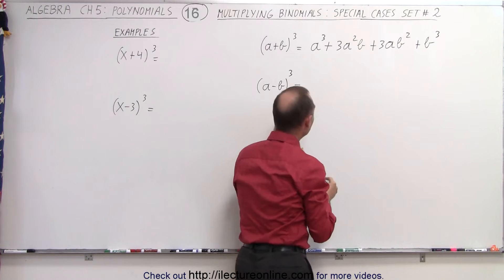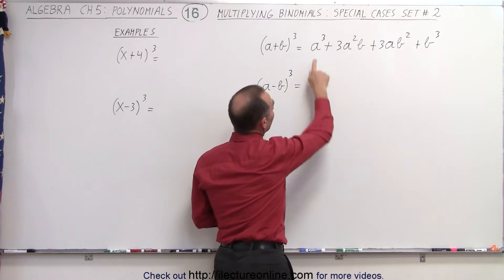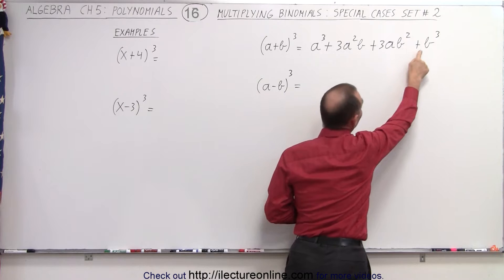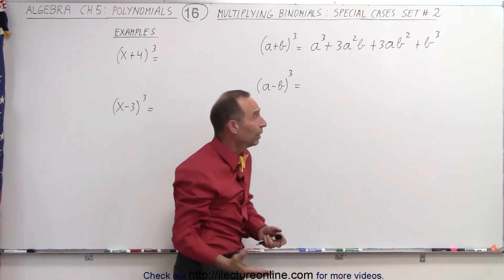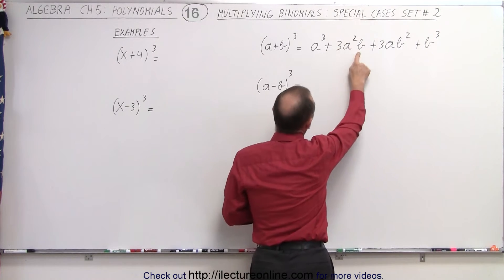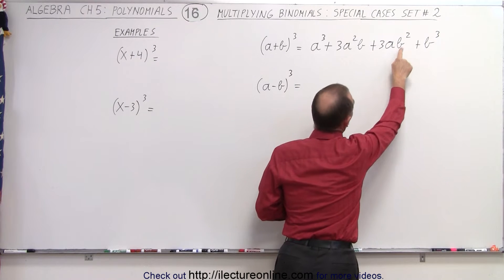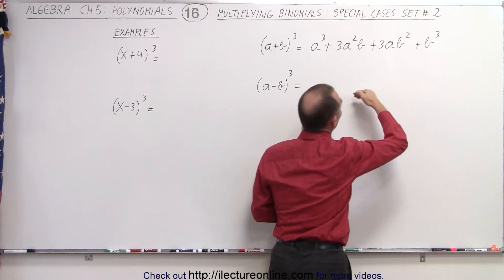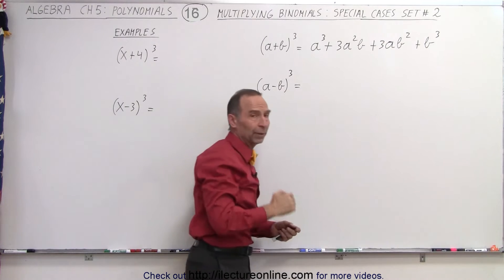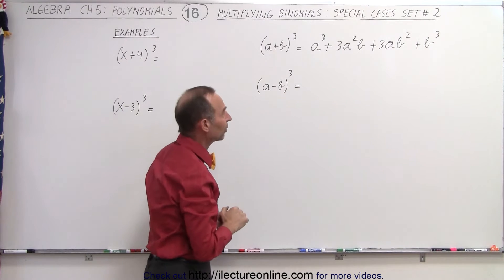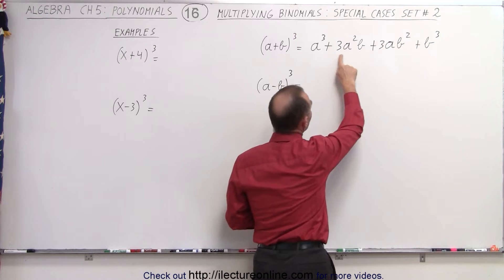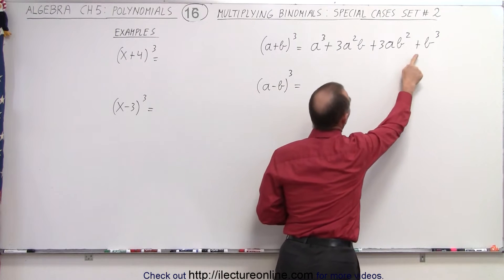Notice the pattern. You have a cubed, a to the second, a to the first, and basically a to the zero power, which is one. You have b to the zero power, which is one, b to the first power, b squared, b cubed. So we have a descending order on the first term and an ascending order on the second term, and the coefficients are one, three, three, and one.